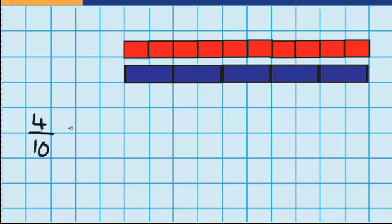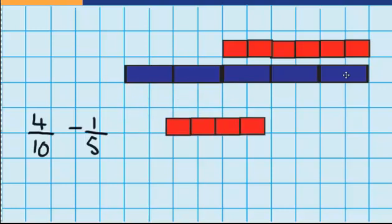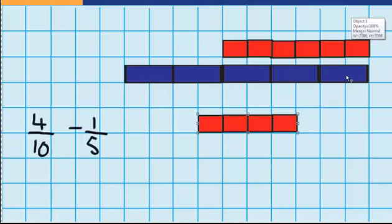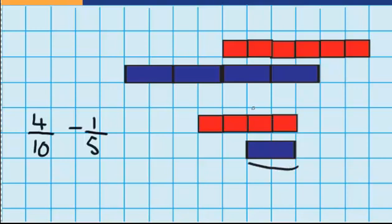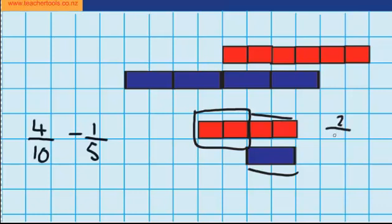Now let's try a subtraction question. This time I've got four tenths of a chocolate bar and I want to take away one fifth, because I've eaten a fifth of that chocolate bar. You can see up here I've got tenths and down here I've got fifths. The question says I start with four tenths, so let's pull those down. There are my four tenths and I need to take away one fifth. Since this is a subtraction question, I'm just sitting one fifth down here so I can work out how much I need to take away. Looking at this picture, you can see that taking away this one fifth is going to be the same as taking away two tenths. So four tenths minus two tenths is going to leave me with two tenths.